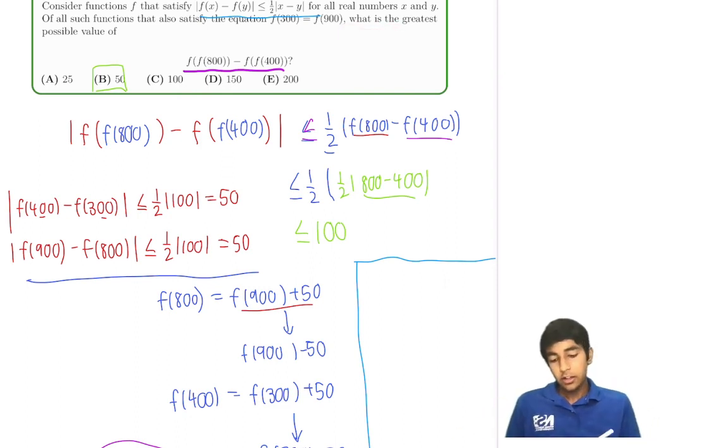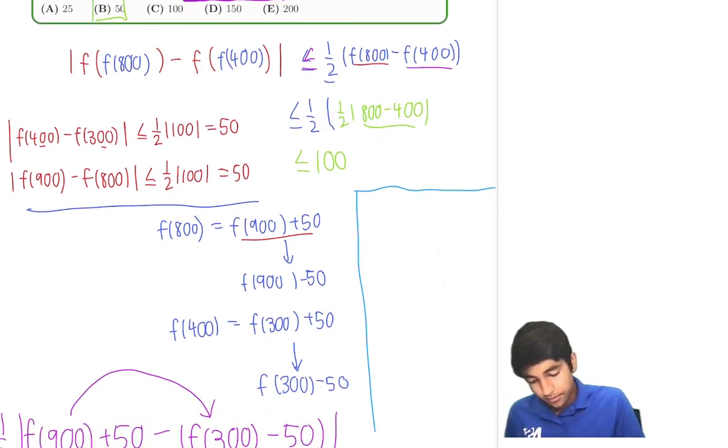Let's summarize. So first we broke down this expression using this condition and then we did a little bit of manipulation. We found this was true and this was true. So our original bound was less than or equal to 100 but then we saw these quantities here.